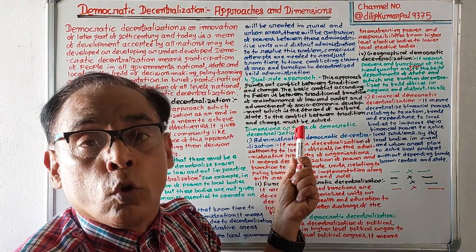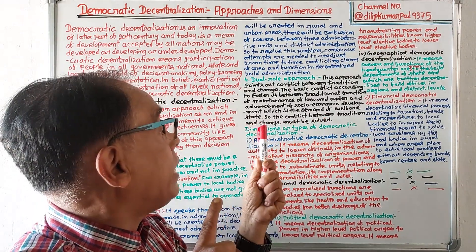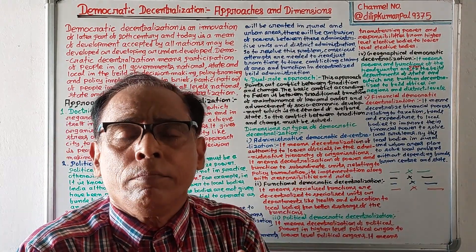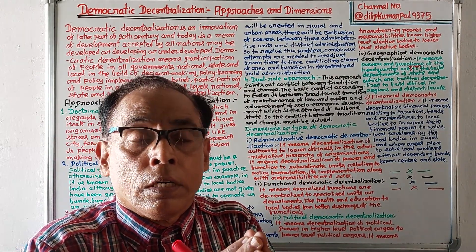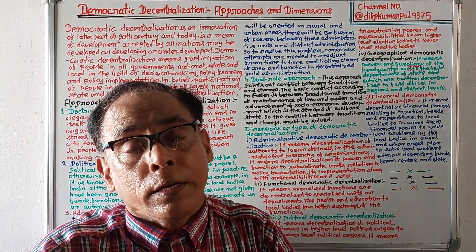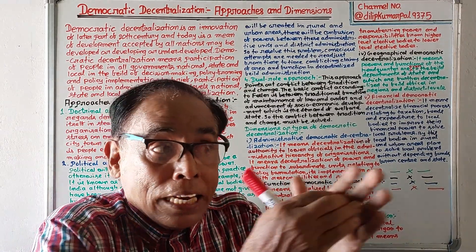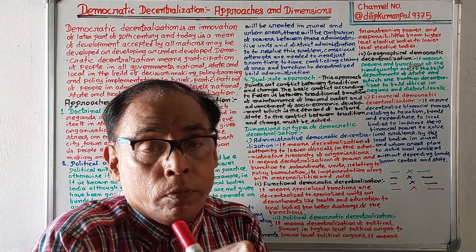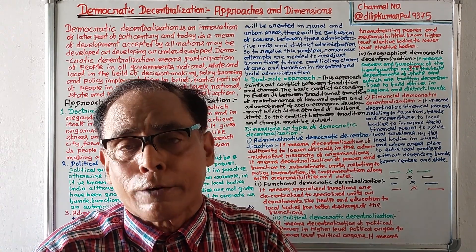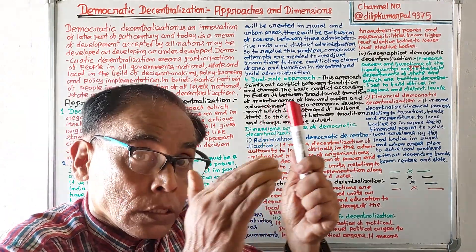So, dual role approach speaks that the conflict between tradition and change must be solved. Whenever there is democratic decentralization, along with the traditional functions of the state and government, some socioeconomic functions — which are the demand of the welfare state — will have to be carried out. That conflict must be resolved.